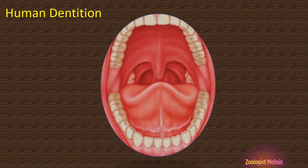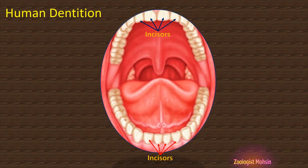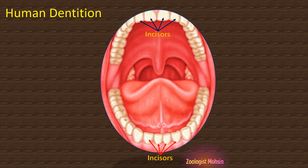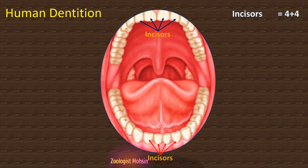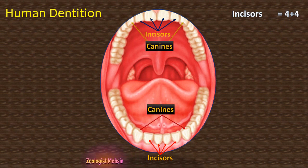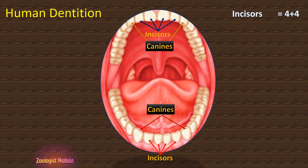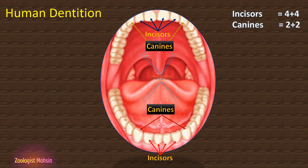Now let's have a look at human dentition. The first type of teeth, present at the front, are called incisors. Focusing on both jaws at once: four teeth on the upper jaw and four on the lower jaw in front are incisors, making 8 in total. The second type of teeth are canines — two canines on the upper jaw and two on the lower jaw, behind the incisors. They are 4 in number: 2 upper and 2 lower.